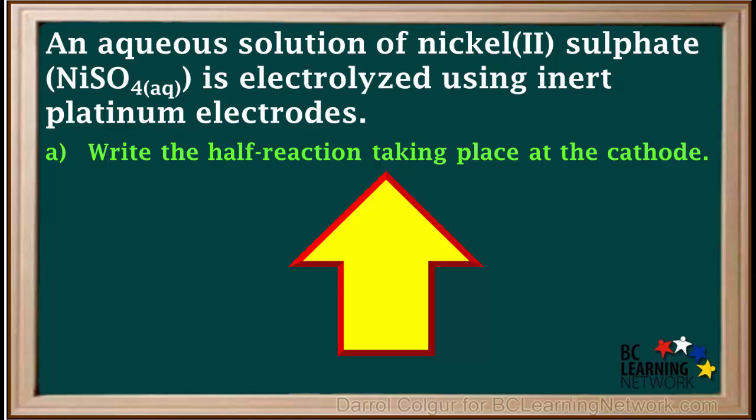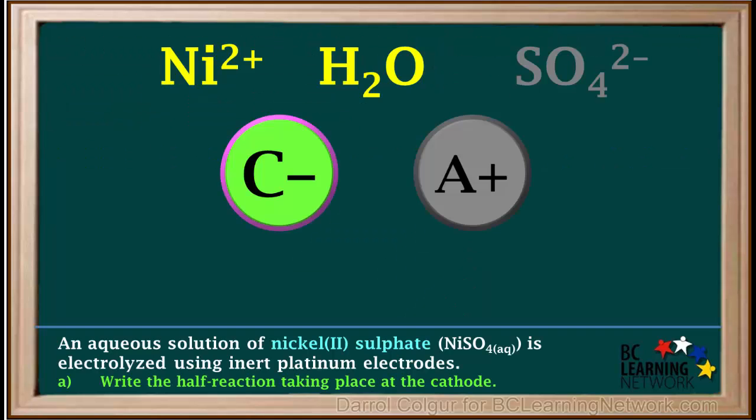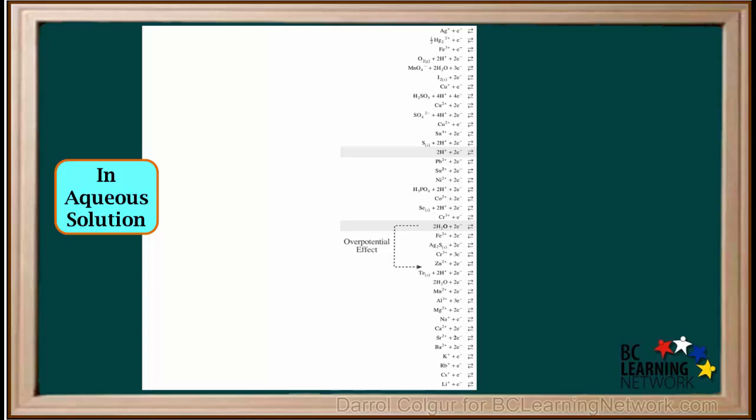write the half reaction taking place at the cathode. At the cathode, either Ni2+ ions or water will be reduced. Remember, if we have an aqueous solution for the cathode, we use the overpotential arrow on the left side of the table.